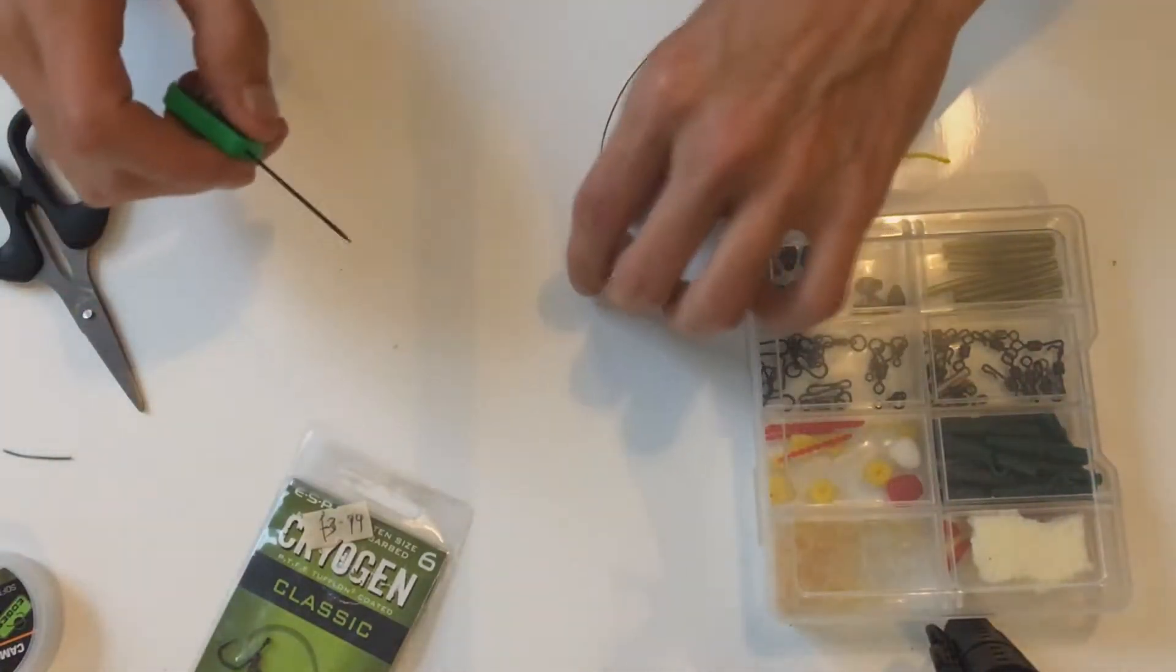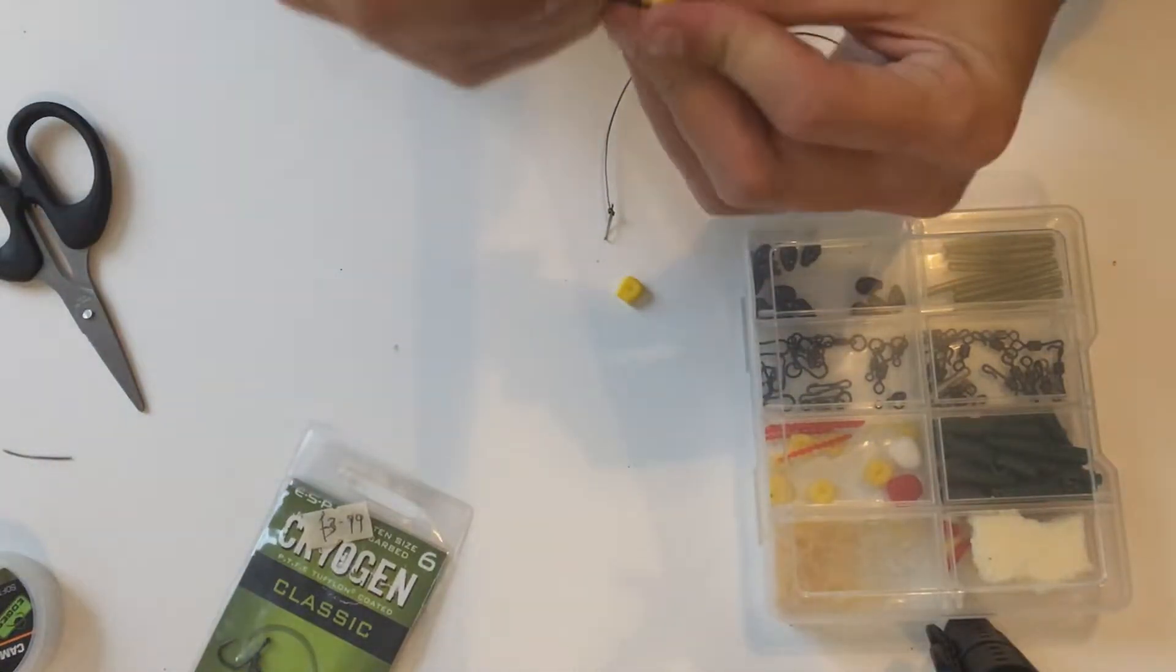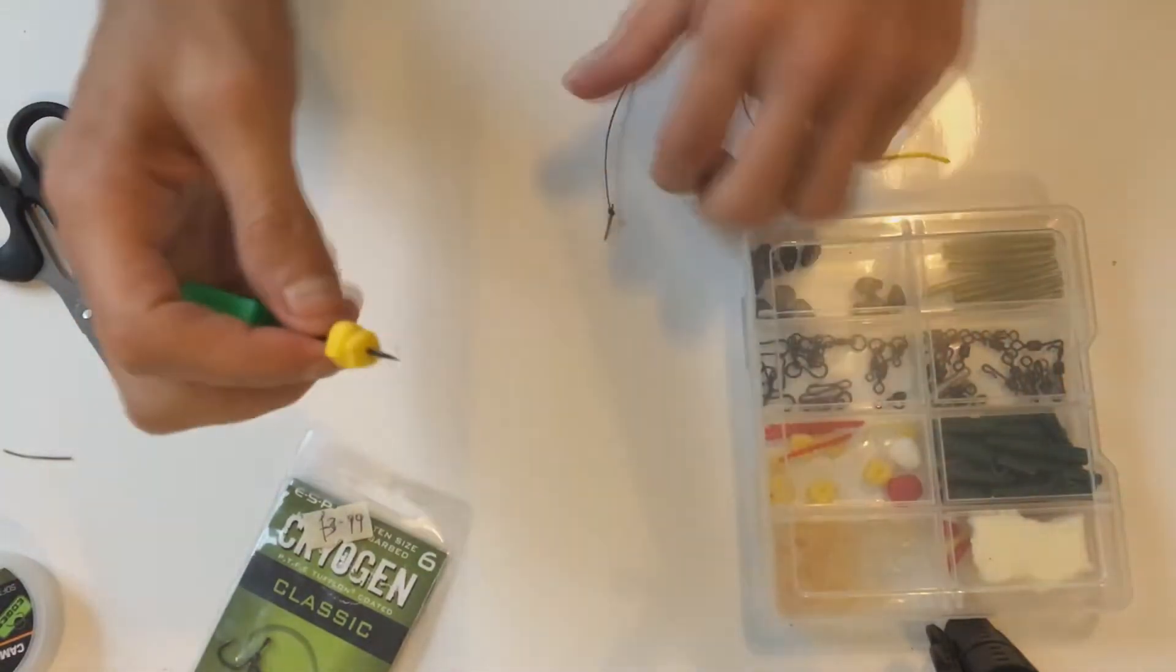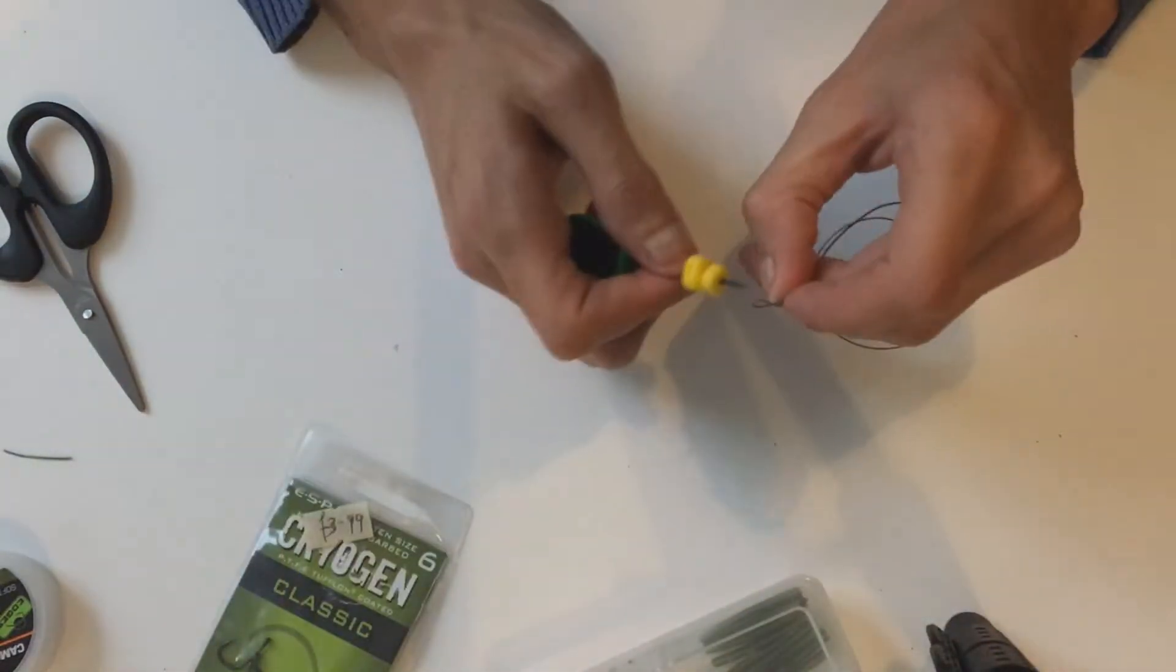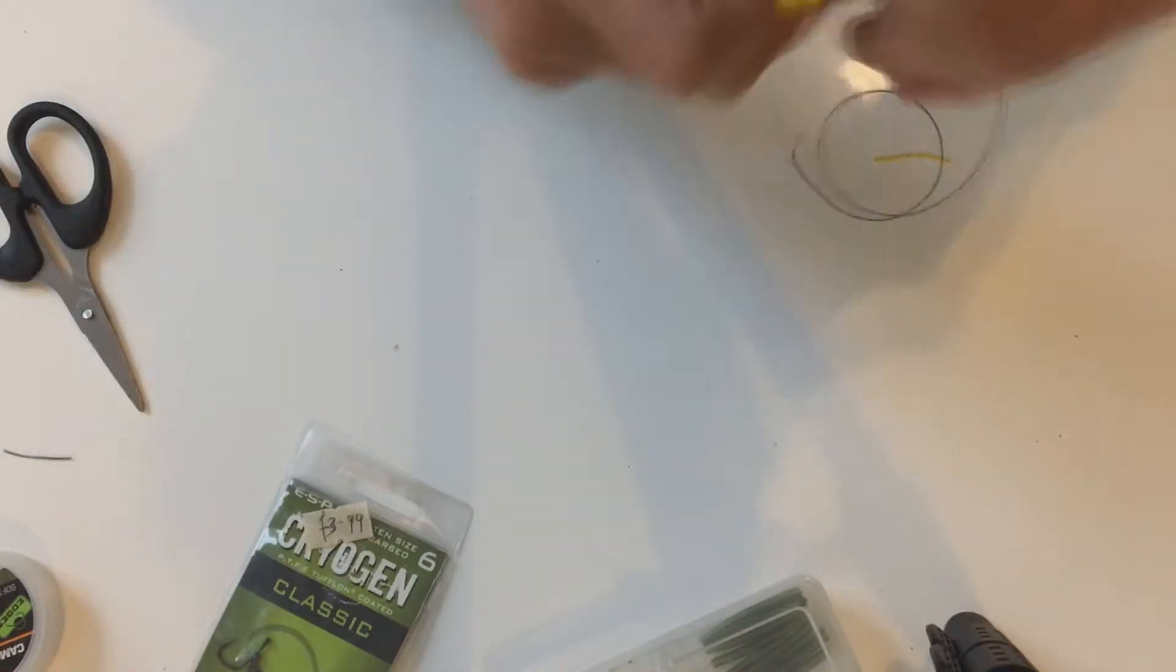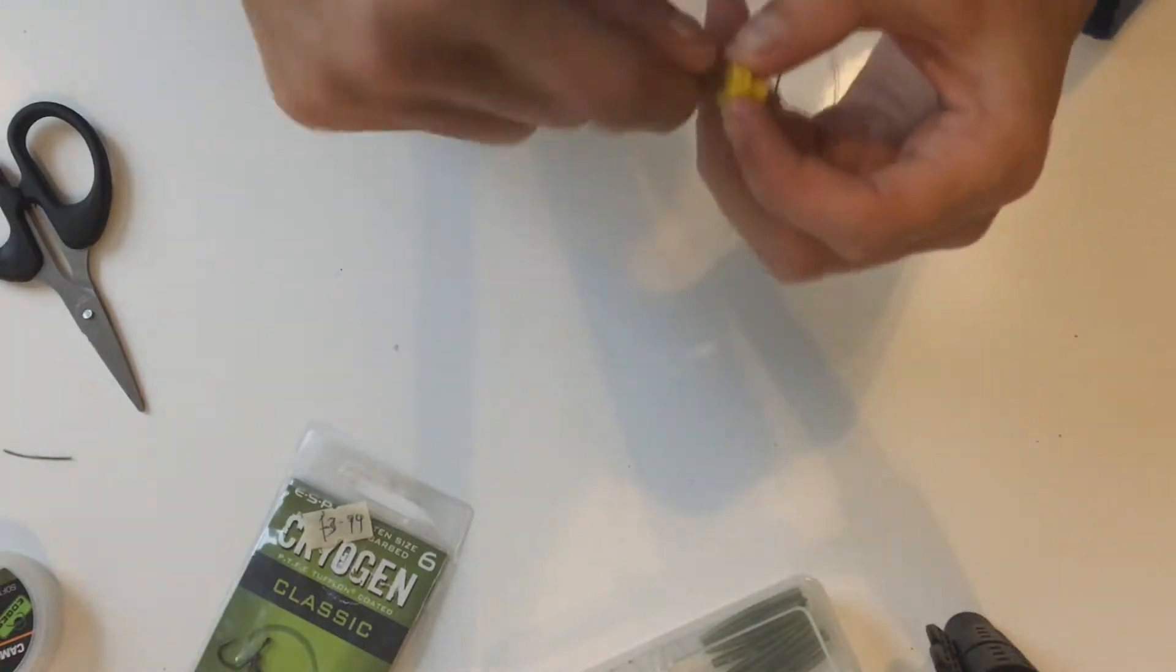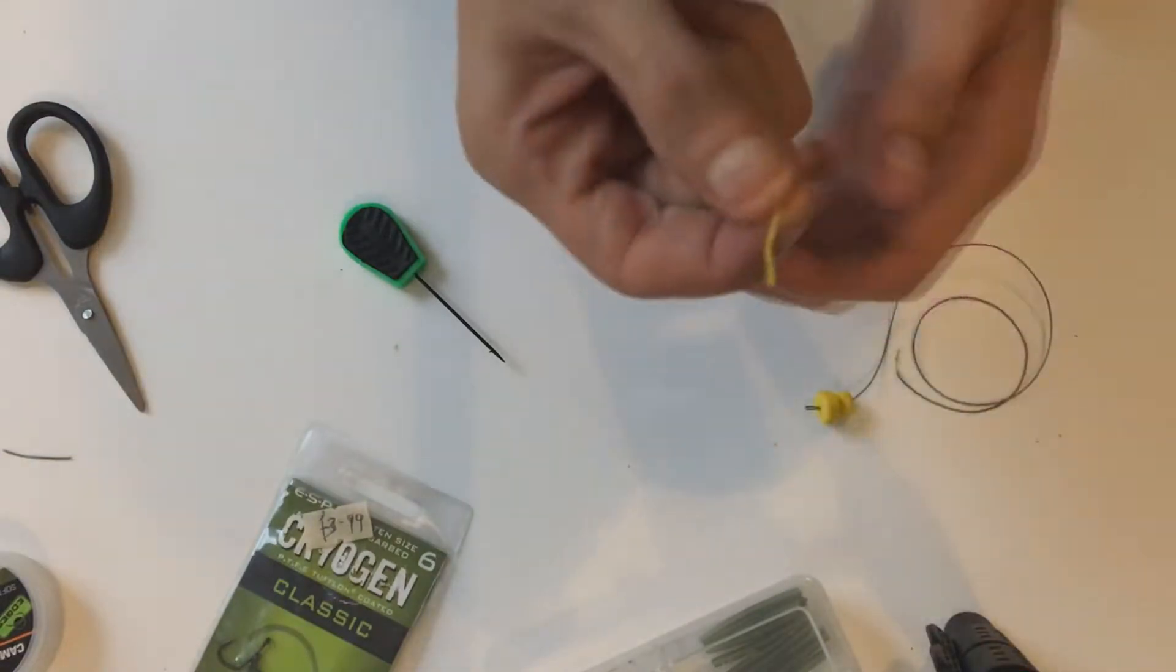So up next we are going to get our bait straight onto the baiting needle like so, and then we're just going to very simply put that through the hair and pull it on tight. Slide it down, slide it down like so.